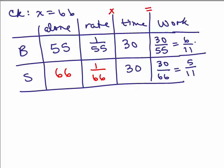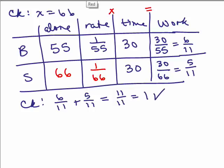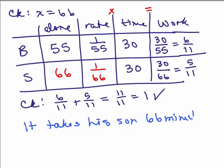So we've got that Barry does 6/11ths of the job and his son does 5/11ths of the job and does that add up to one whole job done? Yes. So we could check that 6/11ths plus 5/11ths equals 11/11ths which is one job done. So now we just answer the question, it takes his son 66 minutes to mow the lawn if he works alone.